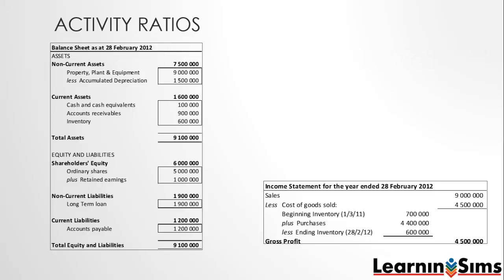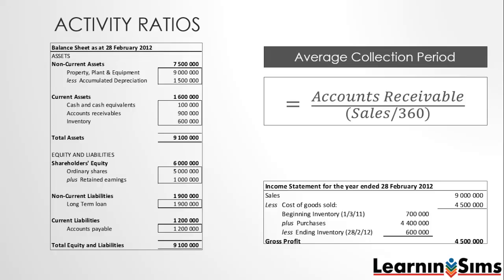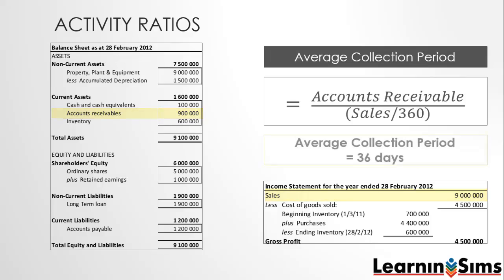The next ratio we will look at is the average collection period. It measures the average amount of time in days needed to collect accounts receivables or debtors. It is calculated by dividing accounts receivables with their average sales per day. In our example, we have accounts receivables of 900,000 divided by the sales of 9 million divided by 360, giving us 36 days.